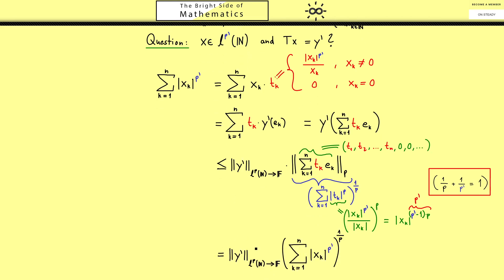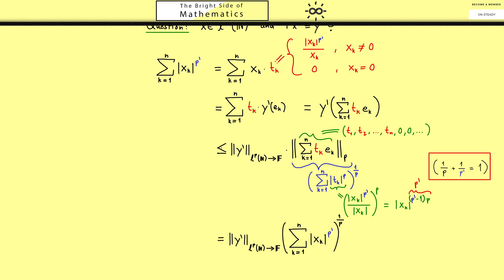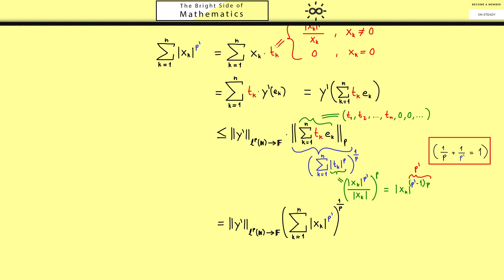We still have the operator norm of y prime but here we have the same sum as on the left hand side just to the power 1 over p. Therefore, and maybe you recognize the trick, we can just divide by this term here and use the definition of the Holder conjugate again because then we get just the p prime norm on the left hand side. And it will be the p prime norm of the vector x if we send n to infinity. So in summary we have that the p prime norm of x is less or equal than the operator norm of y prime. With this you should see we have answered the first question: our vector x lies indeed in LP prime.